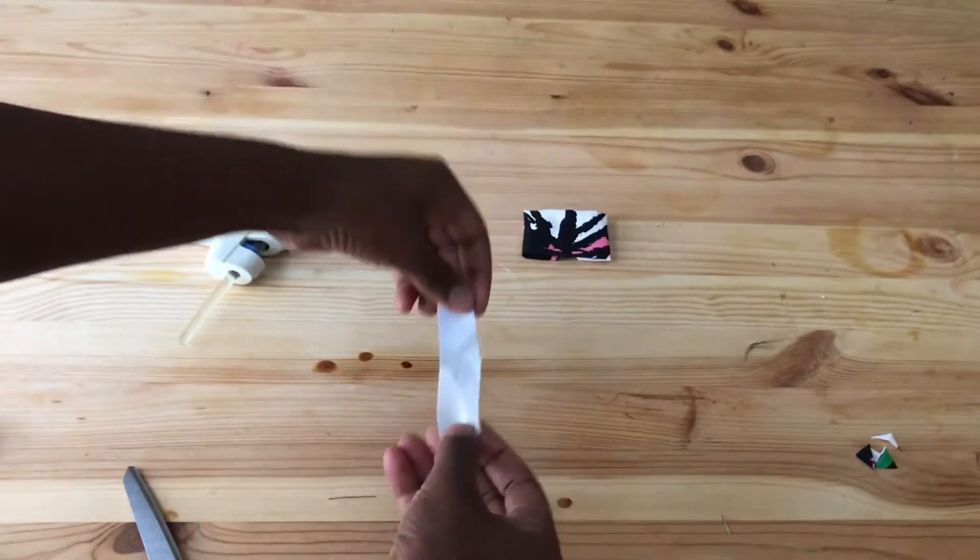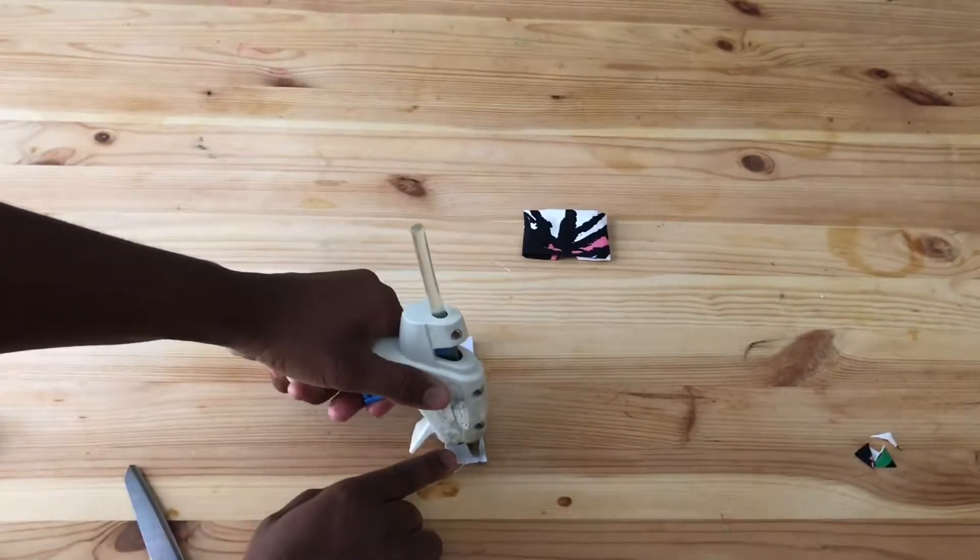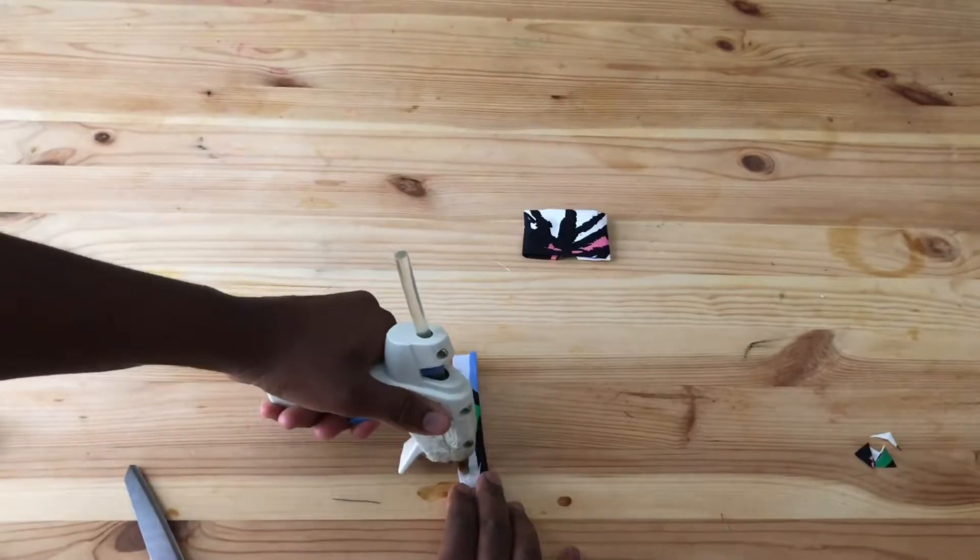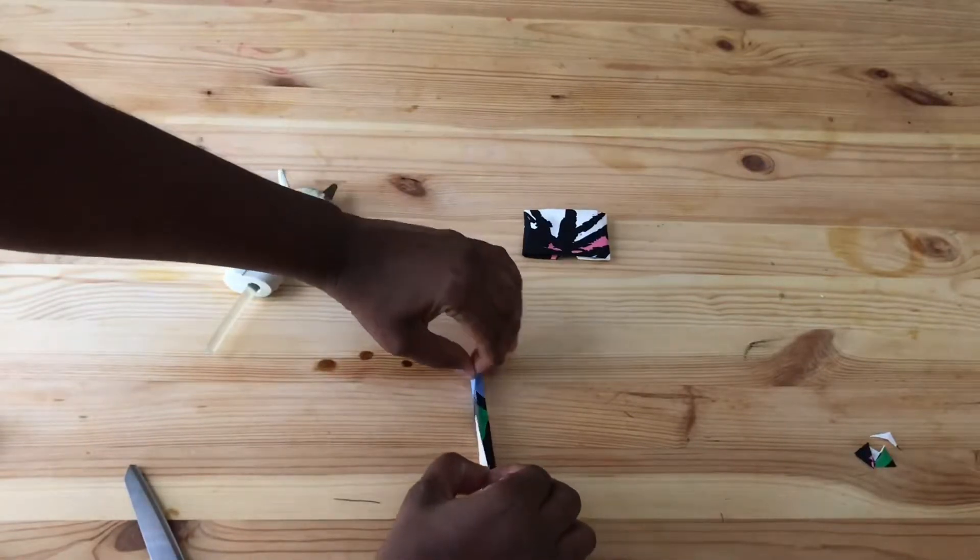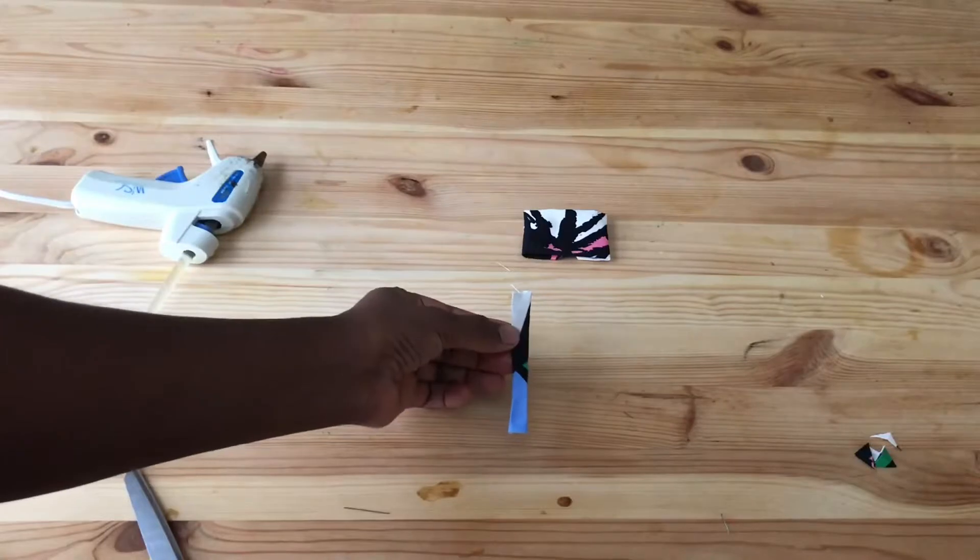We take our one inch by three inch piece of fabric, and we're going to, on the wrong side of the fabric, we're going to hot glue the ends to the center. As well, we do it on the other side.